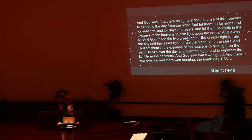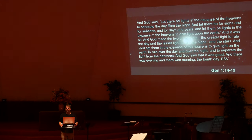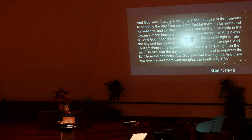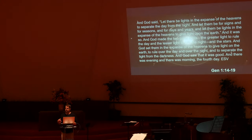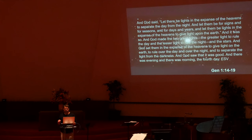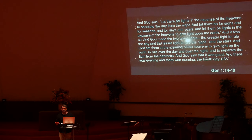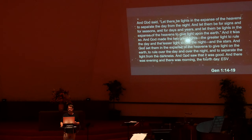The astronomical bodies in the solar system were all formed on the fourth day of creation. Genesis 1:14–19 describes their various processes. And God said, let there be lights in the expanse of the heavens to separate the day from the night, and let them be for signs and for seasons and for days and for years. And God made the two great lights — the greater light to rule the day and the lesser light to rule the night — and the stars. And God saw that it was good. And there was evening and there was morning, the fourth day.